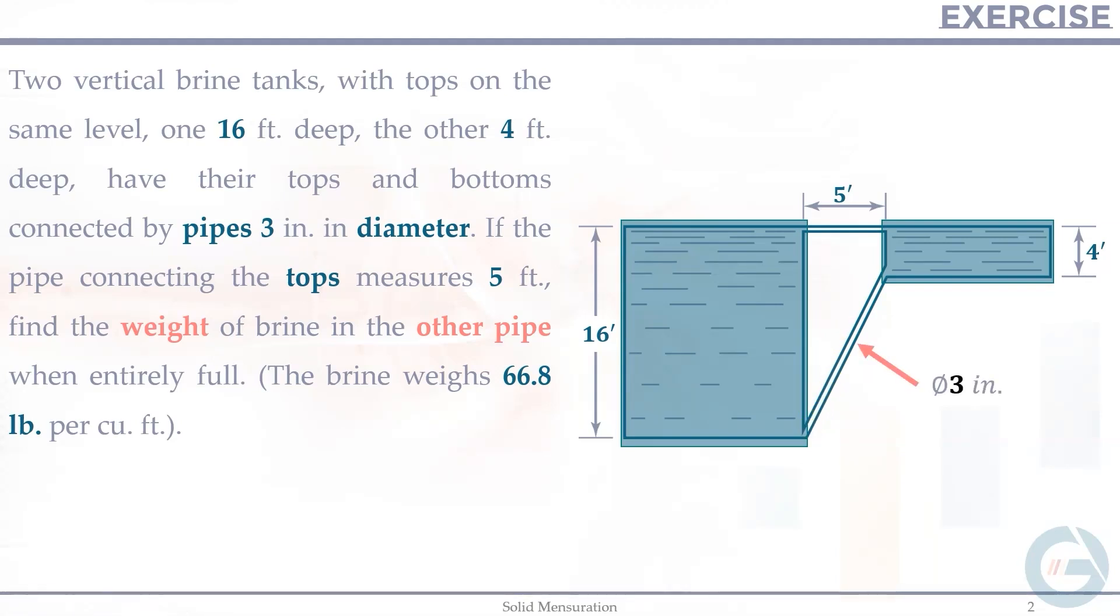If the pipe connecting the taps measures 5 feet, so given the top pipe, the length is 5 feet, find the weight of brine in the other pipe. So this pipe, the weight of the brine in this pipe when entirely full, and also given that the brine weighs 66.8 pounds per cubic foot.